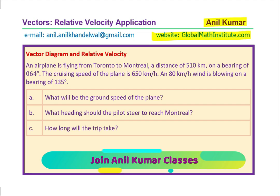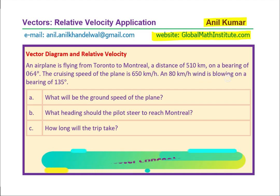In this video, we have taken an excellent question from one of our students. The question is based on vector diagram and relative velocity. An airplane is flying from Toronto to Montreal, a distance of 510 km on a bearing of 064 degrees. The cruising speed of the plane is 650 km/h and an 80 km/h wind is blowing on a bearing of 135 degrees. What will be the ground speed of the plane? What heading should the pilot steer to reach Montreal? How long will the trip take?